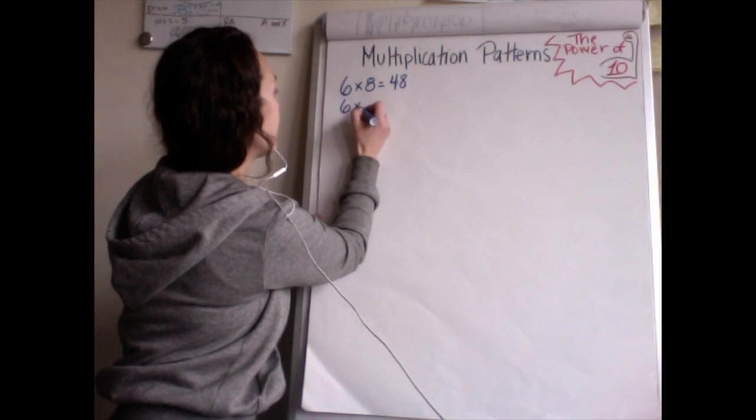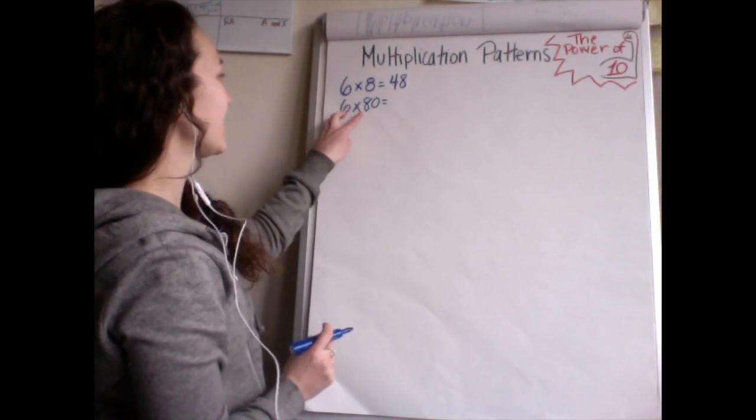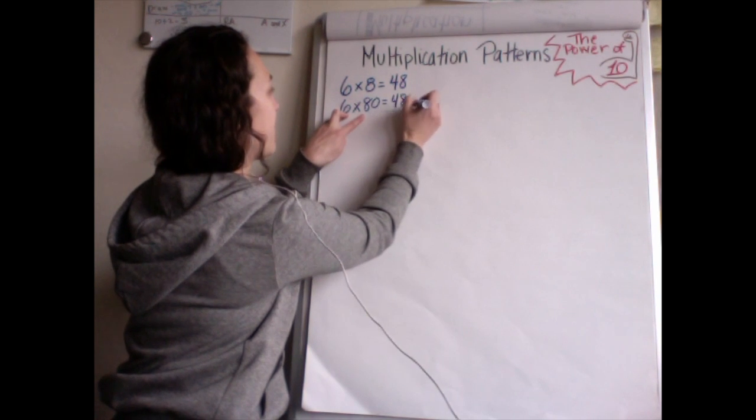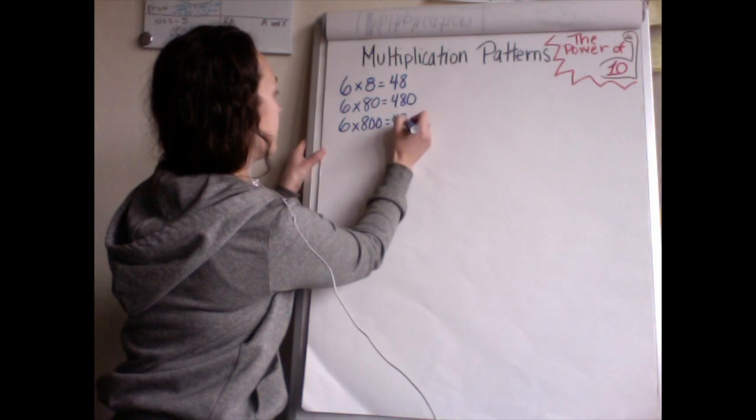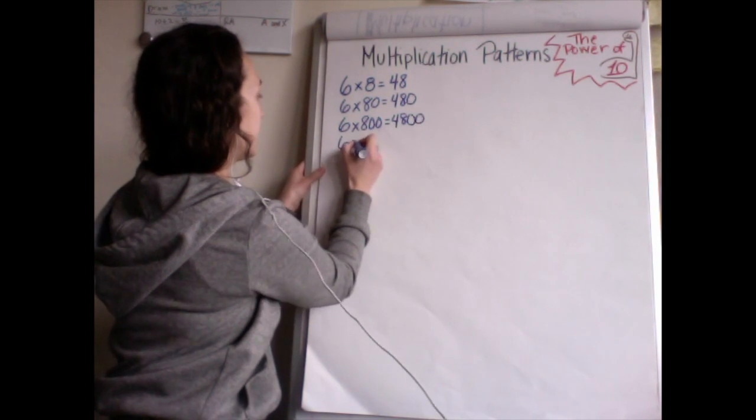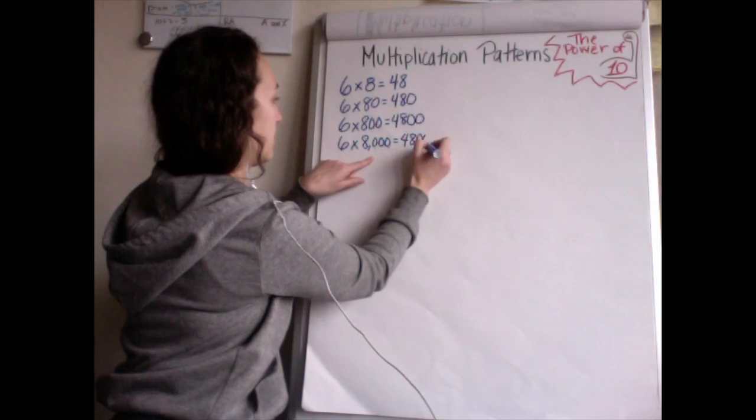Now I have six times 80. The best part is that I can just look at the six times eight is 48 and I know that I've got groups of 10. Six times 800. I know six times eight is 48, 48 hundreds. Six times 8,000 will give me 48 thousands.